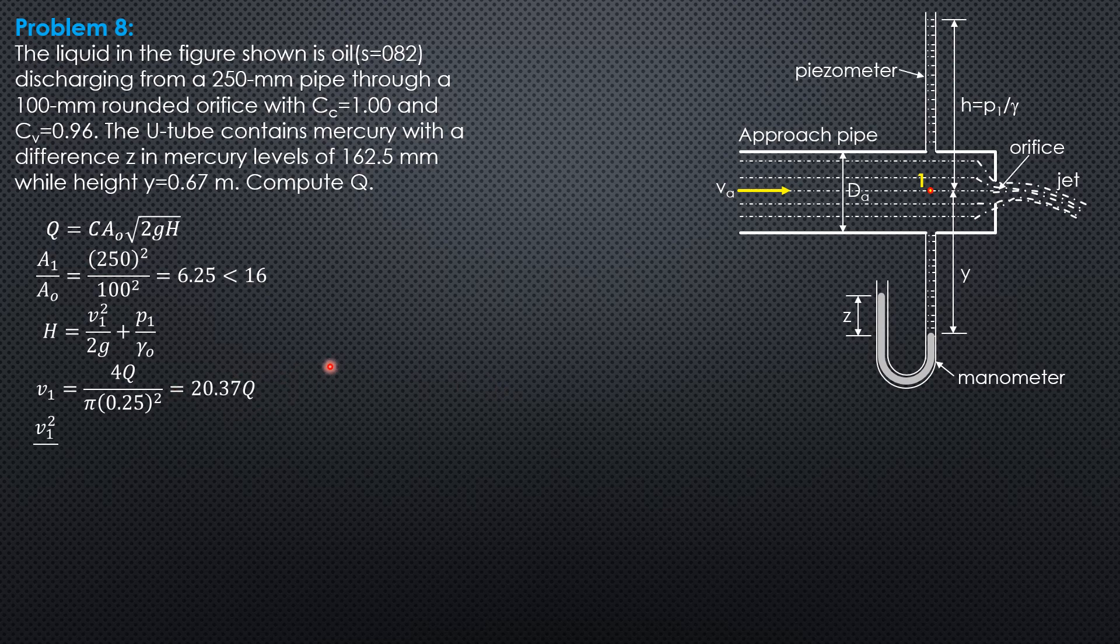The velocity head at point 1 is 21.15Q². Pressure head at point 1: we sum up pressure from point 1.